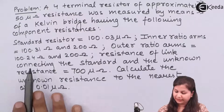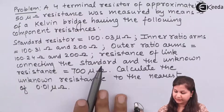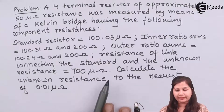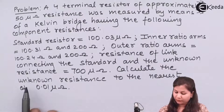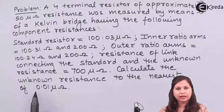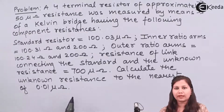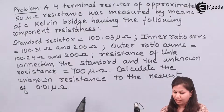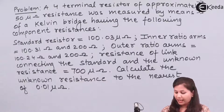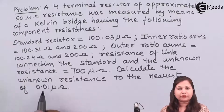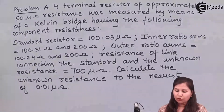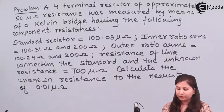The resistance of the link connecting the standard and the unknown resistance is given as 700 micro ohm. We have to calculate the unknown resistance to the nearest value of 0.01 micro ohm, meaning after the decimal up to two digits. Let's try to solve this problem.